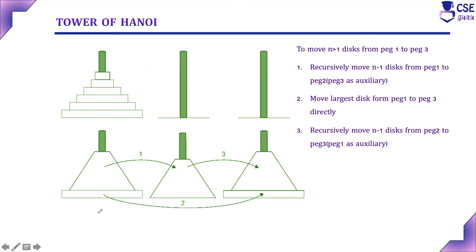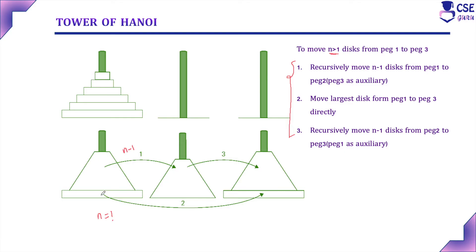If N value is equal to 1 — that is, only one disk — we can directly move it from peg 1 to peg 3. If N value is greater than 1, we need to follow three steps. First step: recursively move N-1 disks from peg 1 to peg 2. Second step: move the largest disk from peg 1 to peg 3. Third step: recursively move N-1 disks from peg 2 to peg 3.